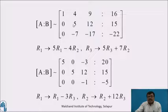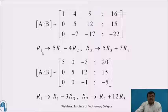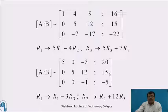Now use the second element of the second row to make the second element of the first row and the second element of the third row become 0 by row transformation. Apply R1 = 5·R1 − 4·R2, R3 = 5·R3 + 7·R2. The augmented matrix AB becomes equivalent to [5, 0, −3, 20; 0, 5, 12, 15; 0, 0, −1, −5].